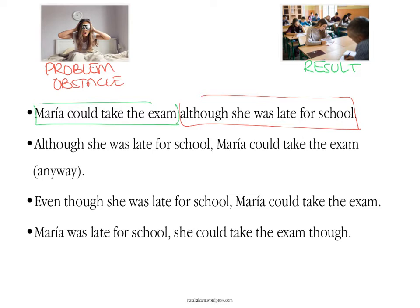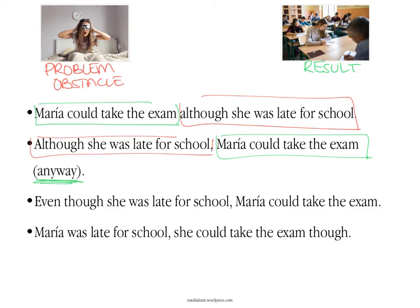As I said, you can say the obstacle and then the result, or the other way around — it doesn't really matter. And if you want, you could add 'anyway' at the end of a sentence, only if it's at the end: Maria could take the exam anyway. Another possibility: instead of 'although,' you could replace it with 'even though' — it's exactly the same. Although she was late for school, even though she was late for school — and then the result: Maria could take the exam.